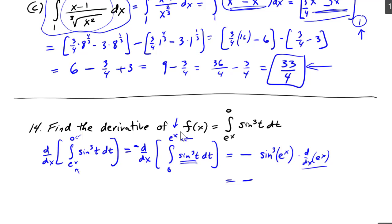So minus e to the x sine cubed of e to the x. And that does it. That's the derivative of that integral function using the second fundamental theorem of calculus.